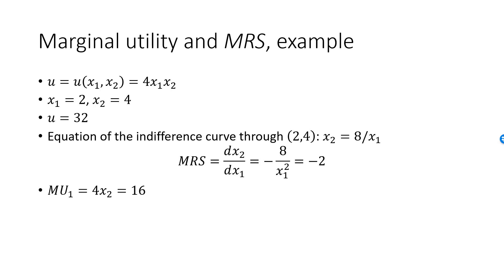Keep in mind that 16 on its own means nothing to us. MU2 is the partial derivative of u with respect to x2, which comes out to be 4x1, which is 8 when x1 equals 2. The ratio of the marginal utilities is 16 divided by 8, and minus this ratio equals minus 2, precisely the value that we found for MRS.